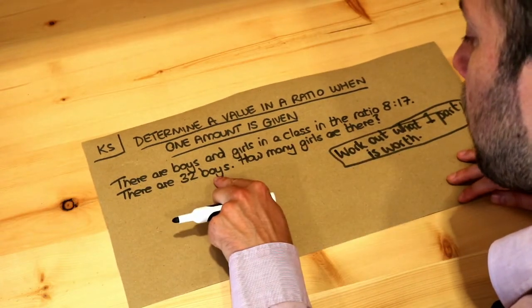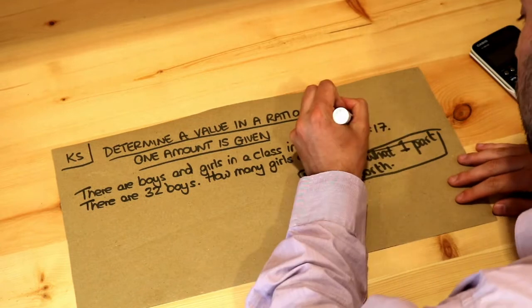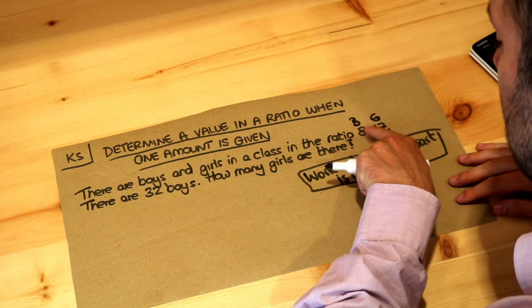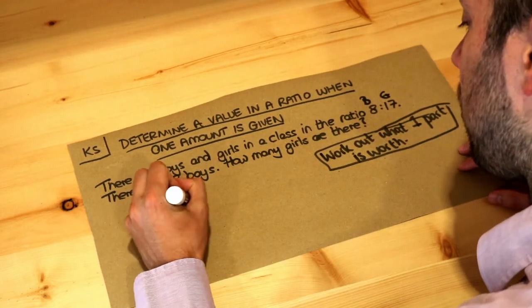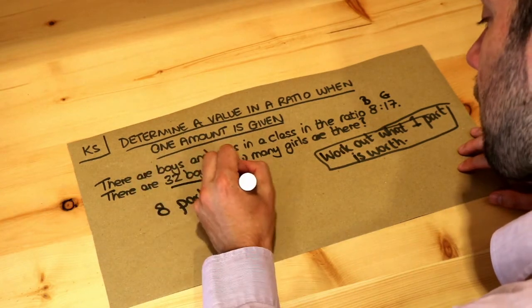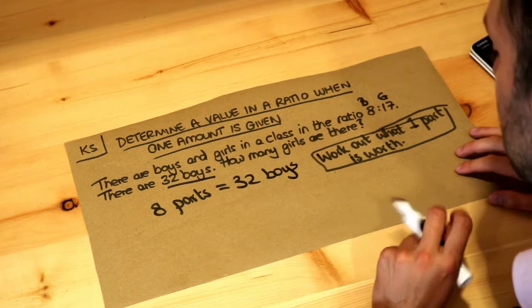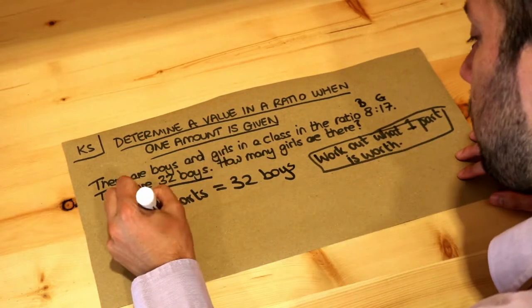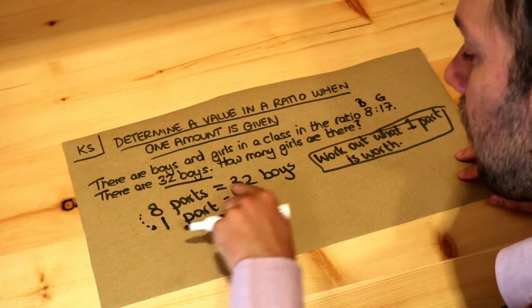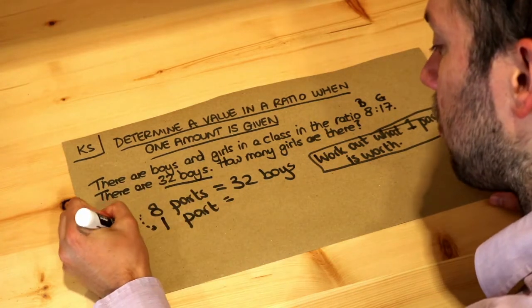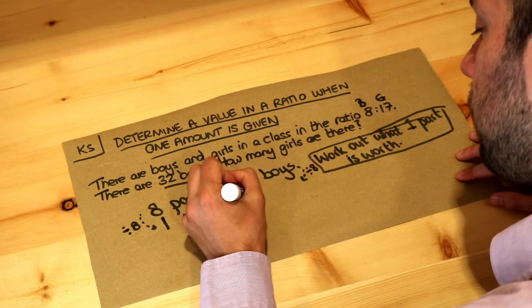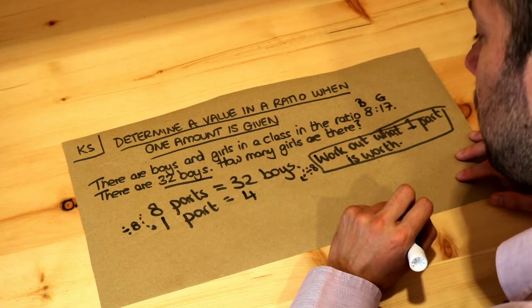Now we're told there are 32 boys. In the ratio of boys to girls we have 8 parts boys — remember these things in the ratio are the parts — so we write down: 8 parts is equal to the 32 boys. We want to work out what one part is worth, so one part would be 8 times less. Dividing by 8: 32 divided by 8 is equal to 4. So one part represents 4 students.